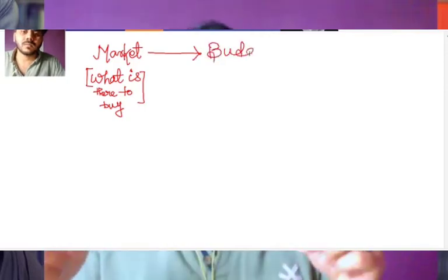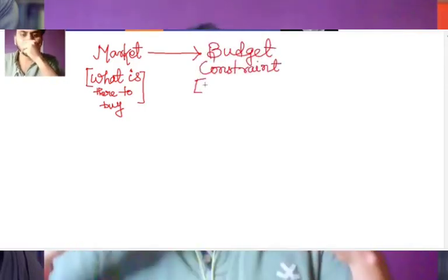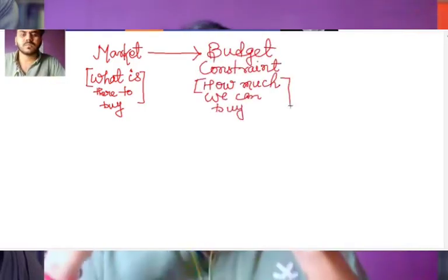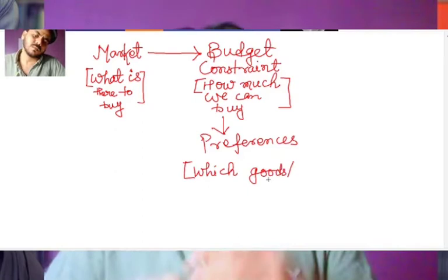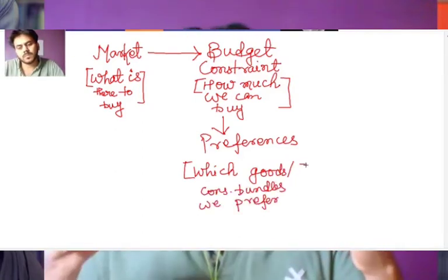In chapter 1, market, we read what is there to buy. In chapter 2, we found out how much we can buy - budget constraint. In chapter 3, we introduced the idea of preferences: which goods or consumption bundles we prefer.